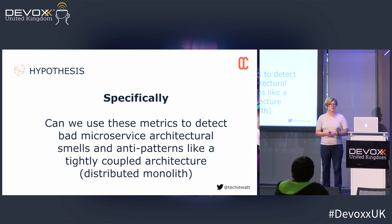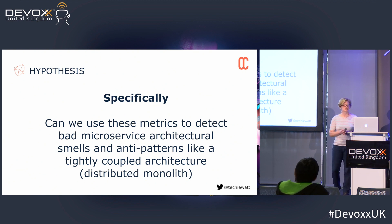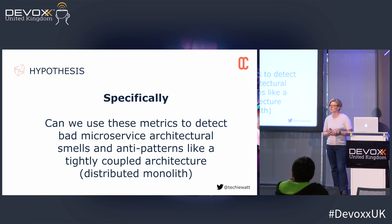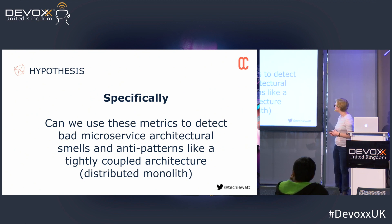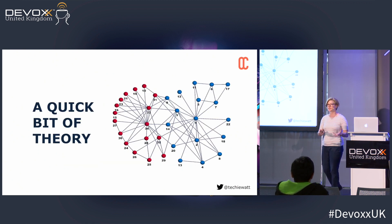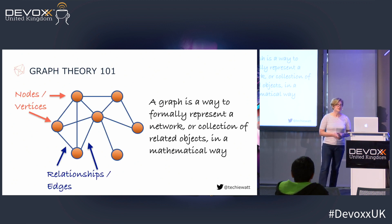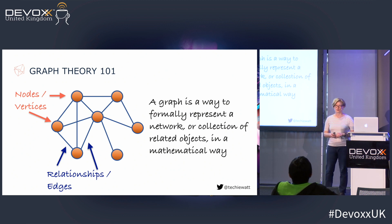We're limited in time, so we're going to look at a specific area and see if we can use some of these metrics to detect bad architectural smells — microservice smells like a tightly coupled architecture or the like. But first we've got to start with a little bit of theory just to set the scene so that we can then practically apply that to our microservices.